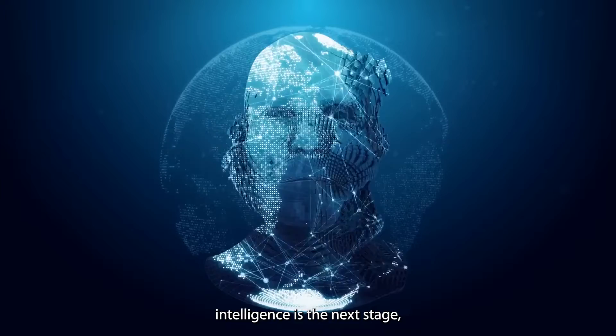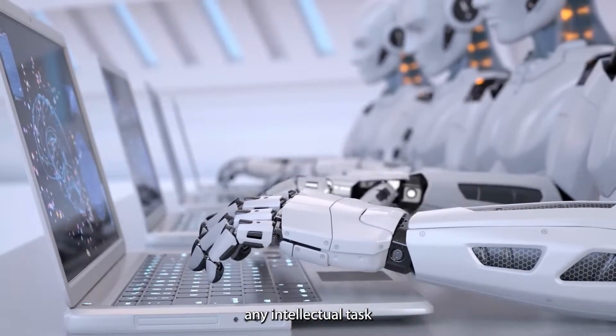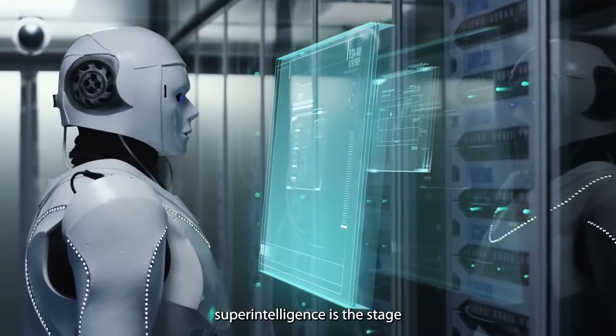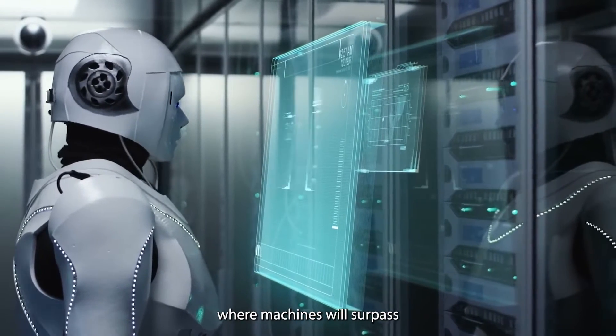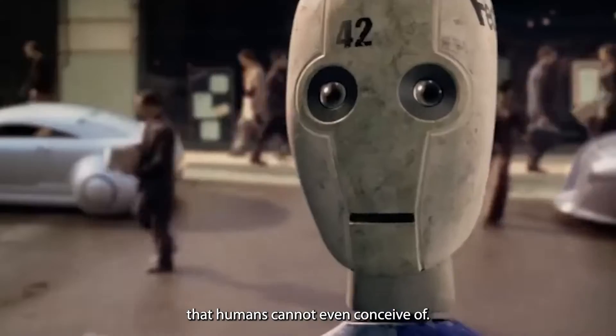Artificial general intelligence is the next stage, where machines will be able to perform any intellectual task that a human can do. Finally, artificial super intelligence is the stage where machines will surpass human intelligence and be capable of solving problems that humans cannot even conceive of.